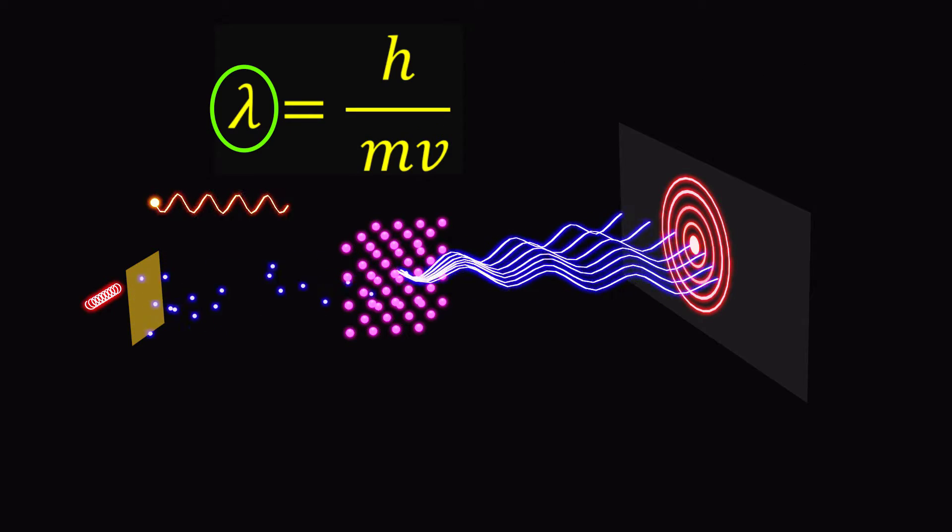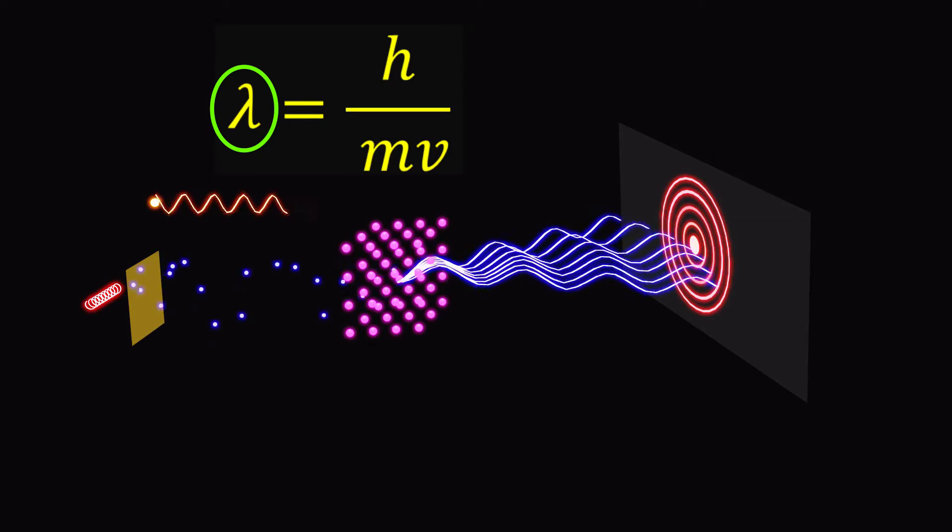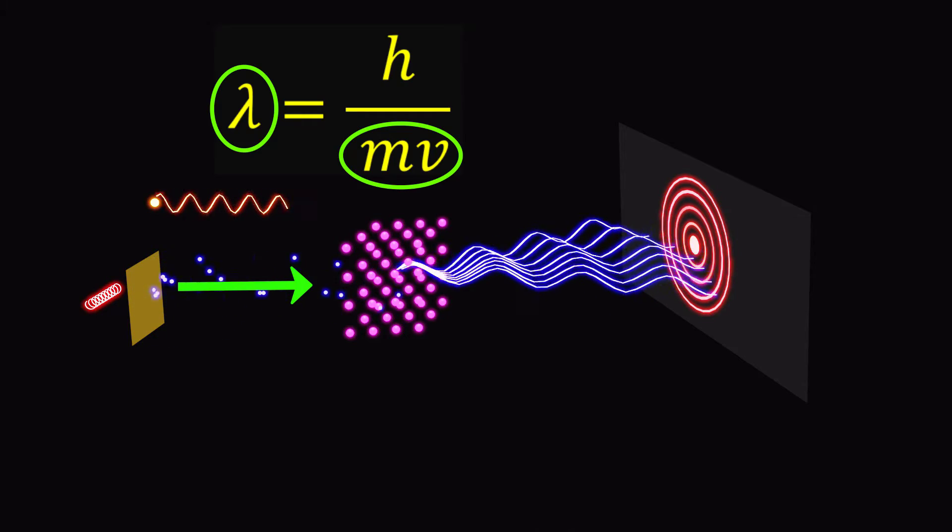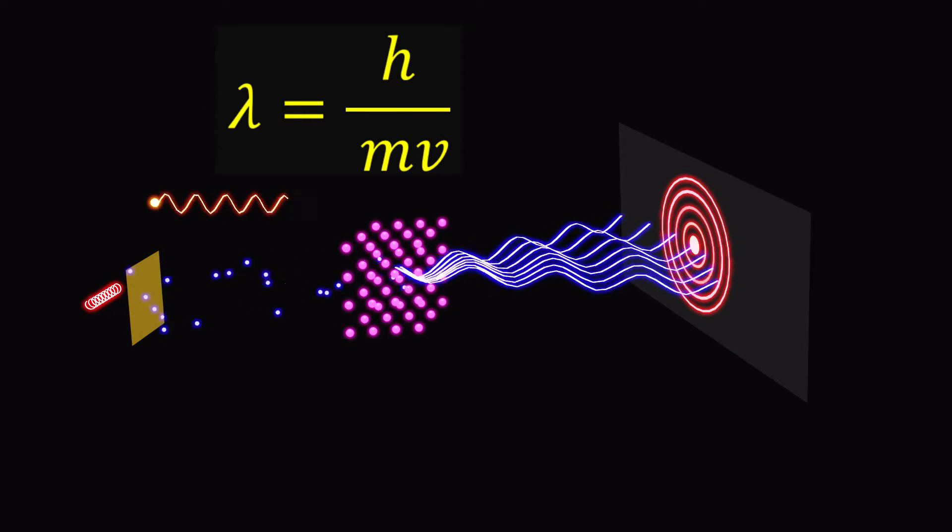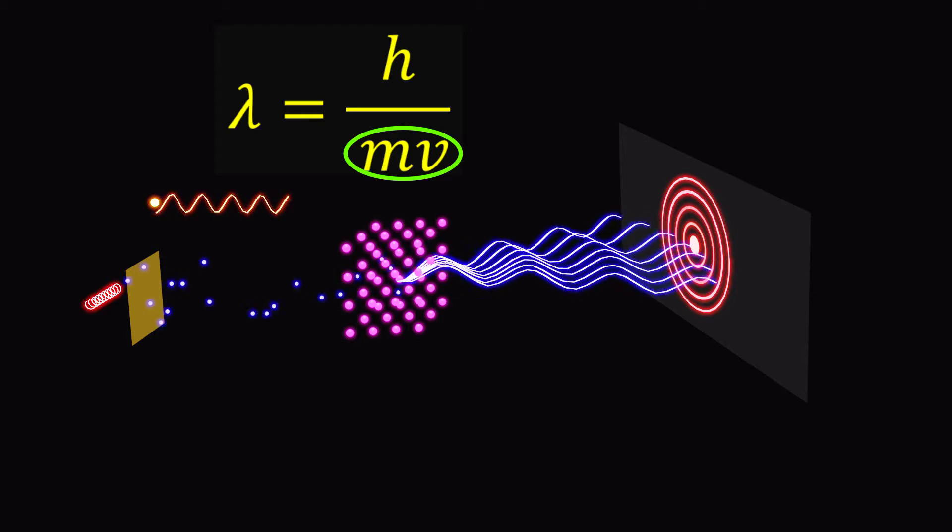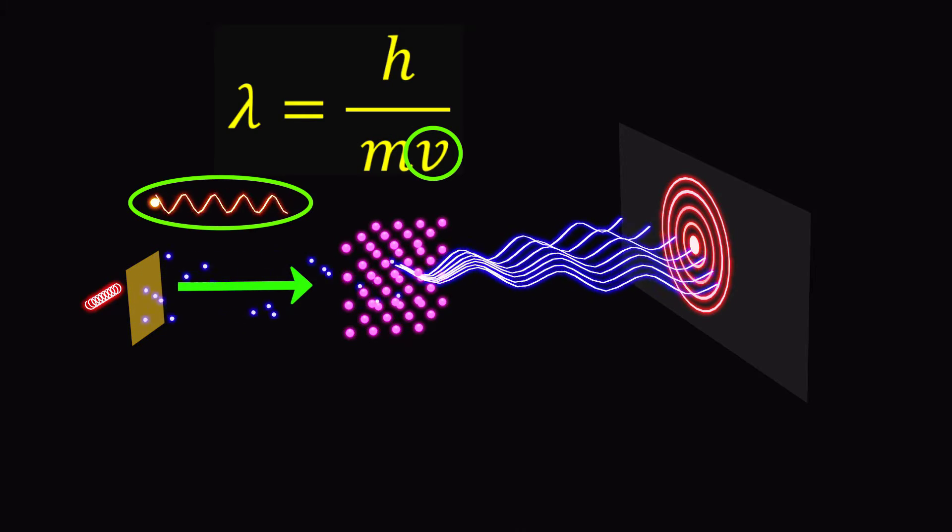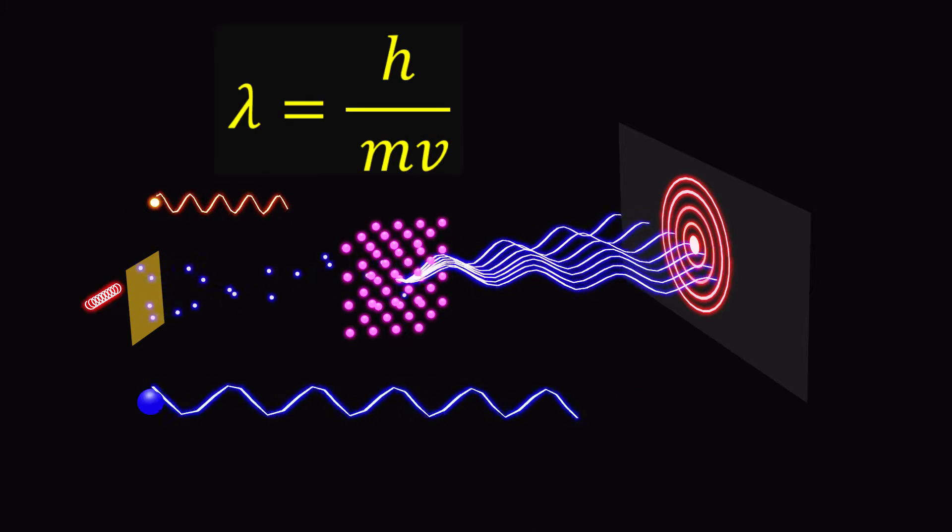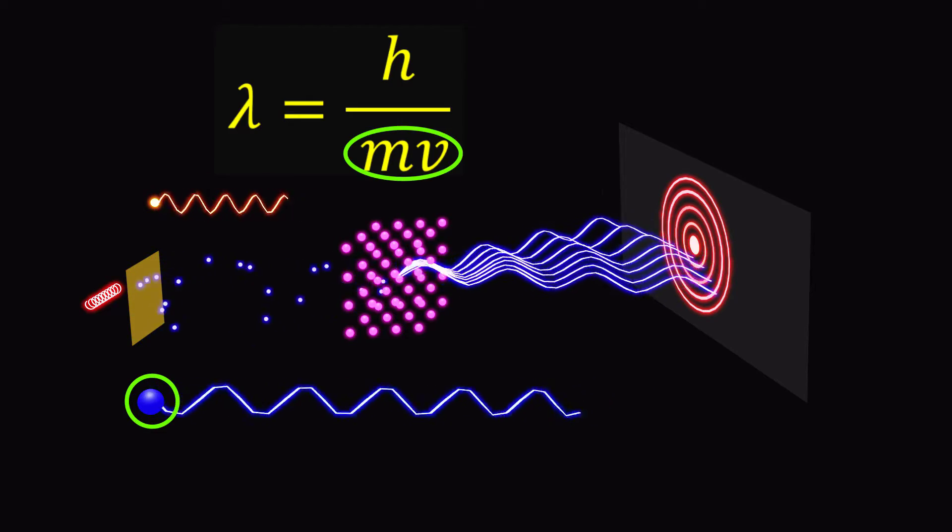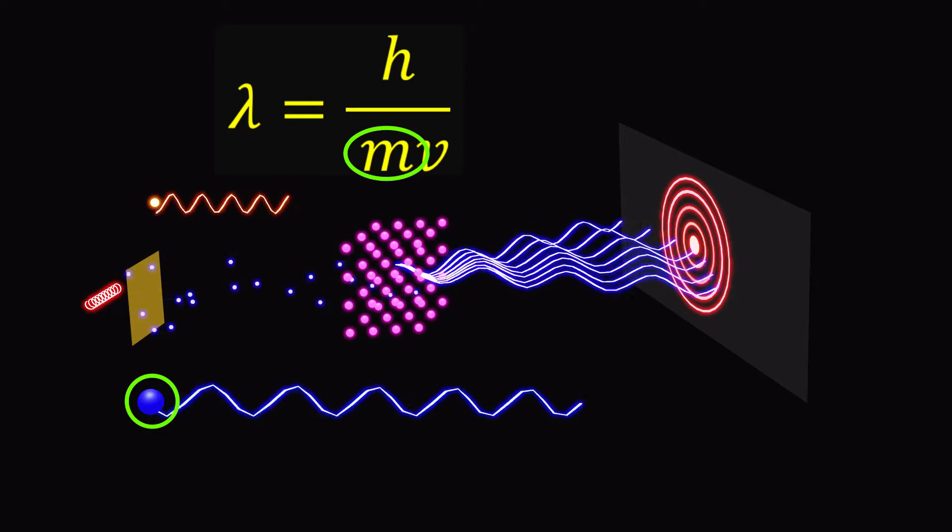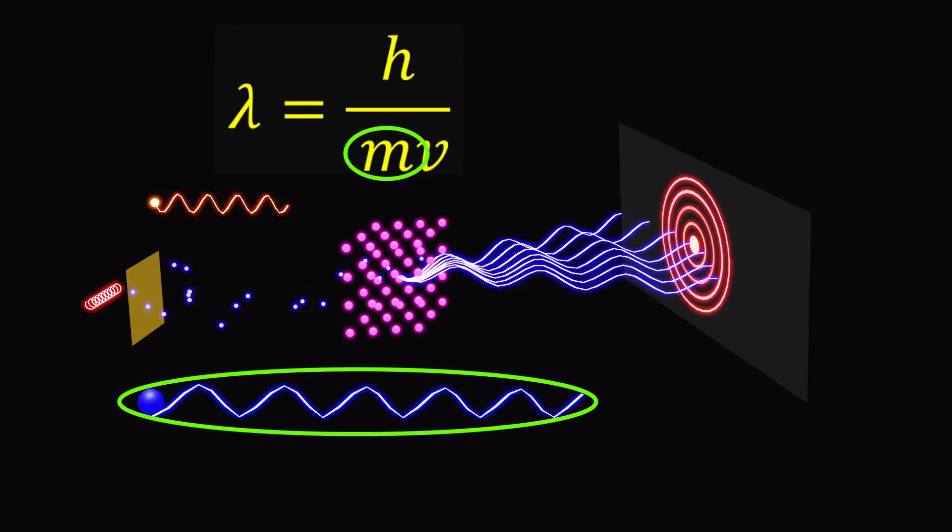The wavelength of a matter wave is inversely proportional to the momentum of the particle. This means that particles with high momenta, such as electrons moving at relativistic speeds, have very short de Broglie wavelengths. Particles with low momenta, such as large molecules, have very long de Broglie wavelengths.